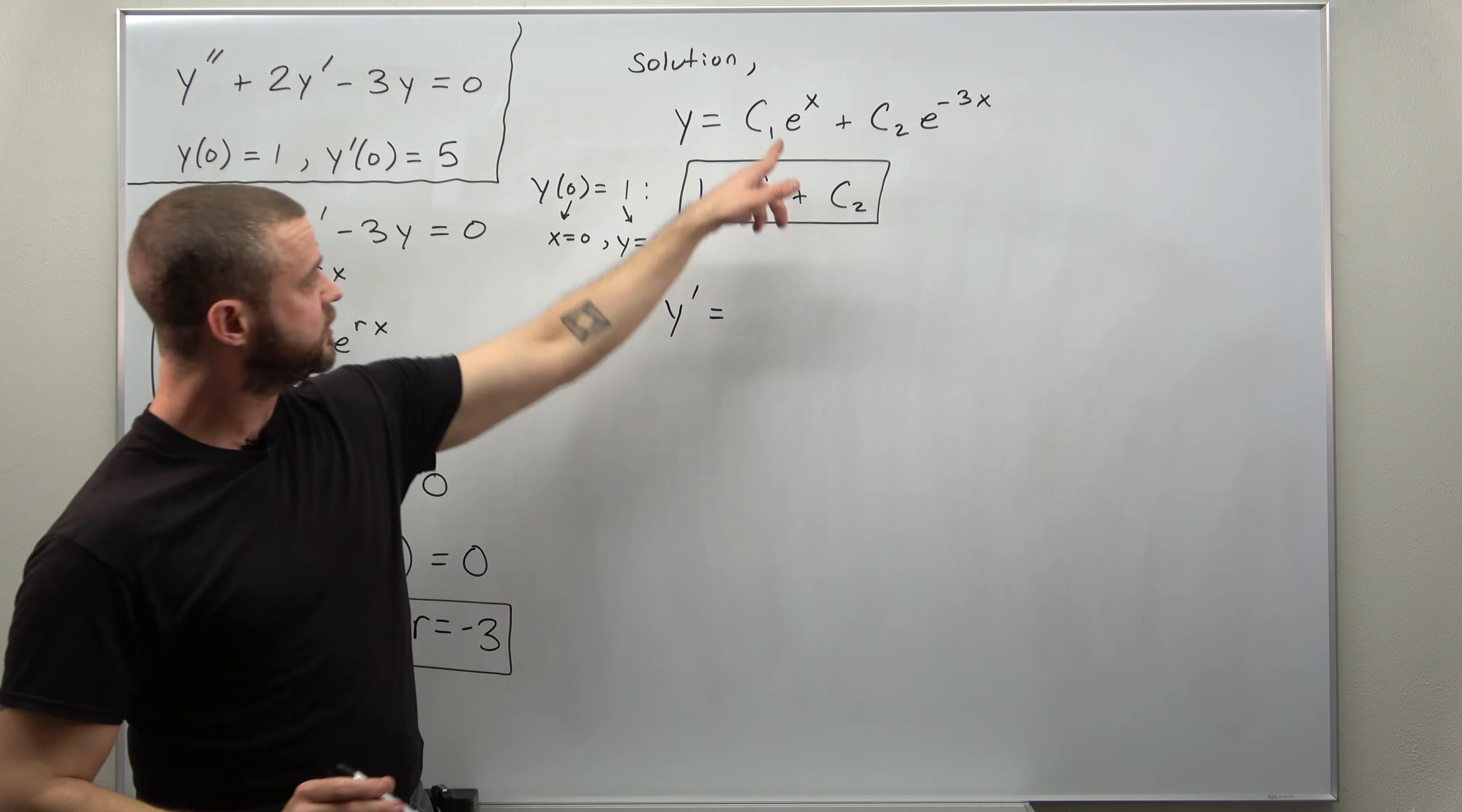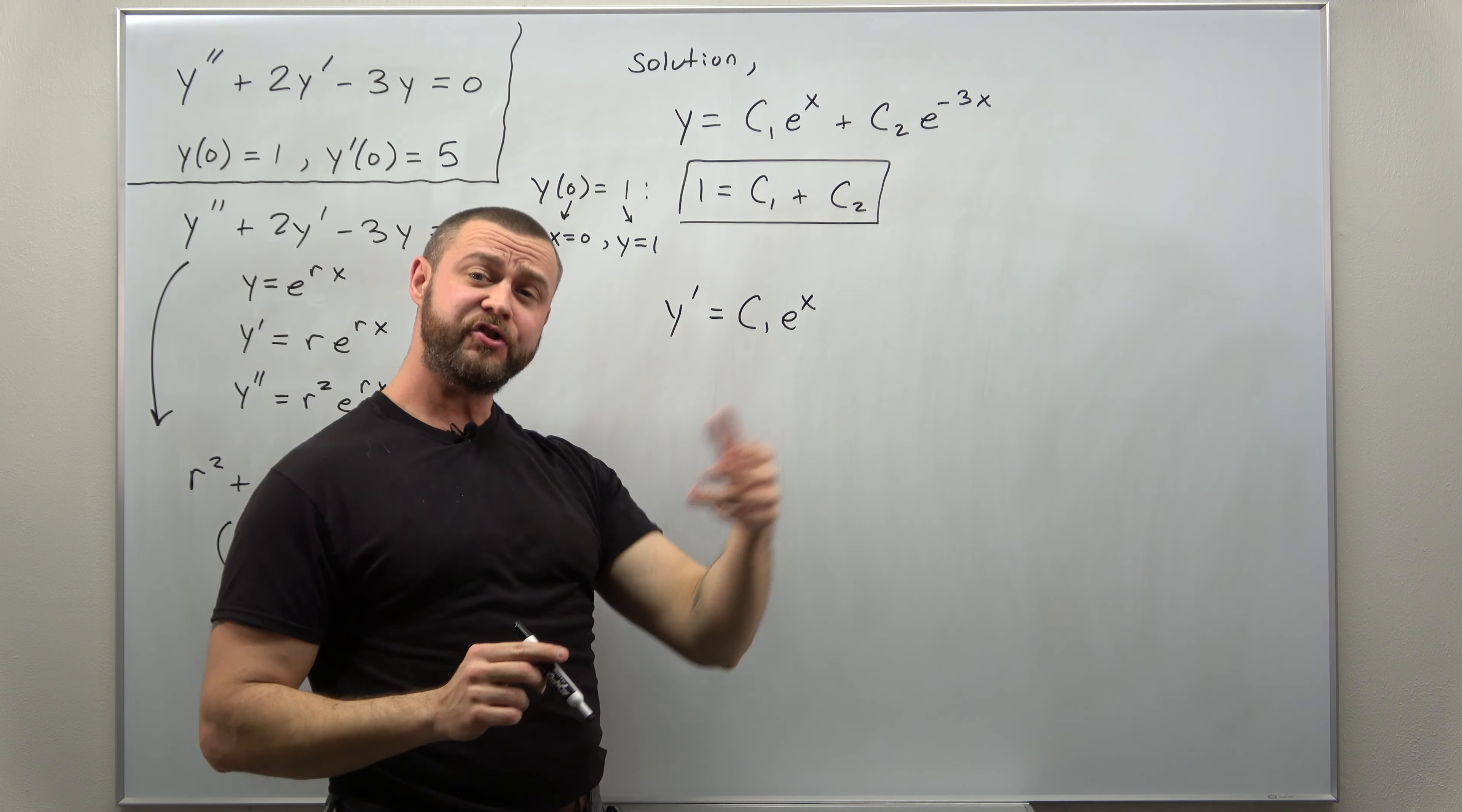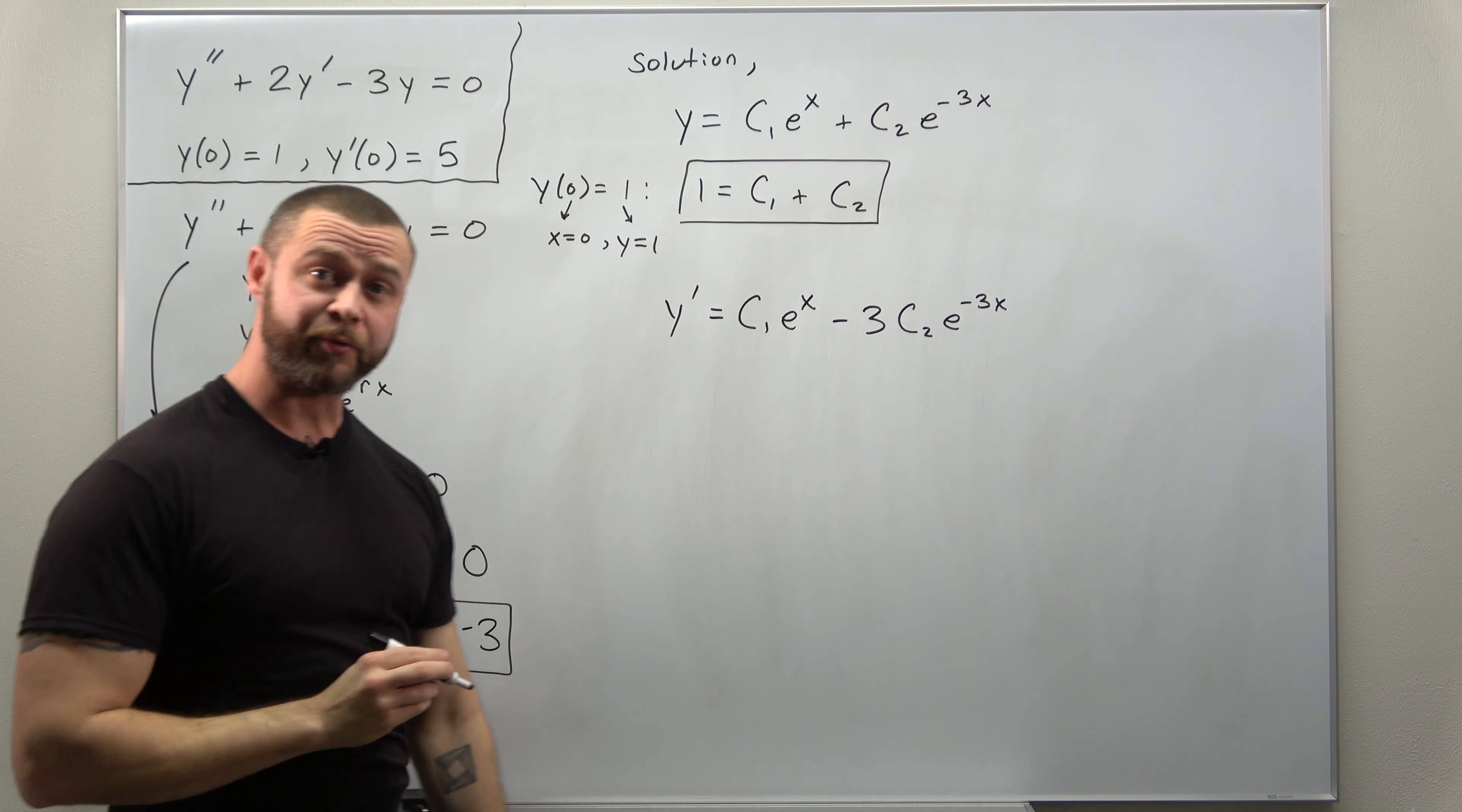So differentiate e to the x, you get itself. So y prime is c1 times e to the x. And when you apply the chain rule to differentiating e to the negative 3x, the chain rule gives you a factor of negative 3 coming down. So we'll write that as minus 3 c2 times e to the negative 3x.